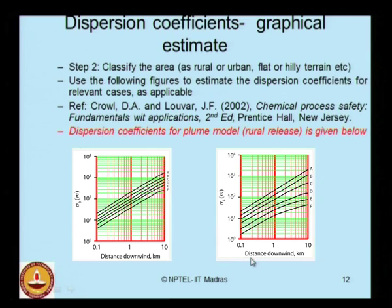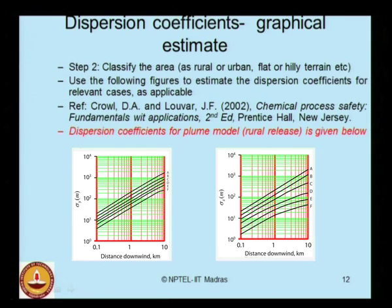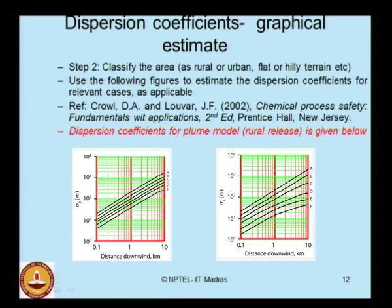For a given downwind distance in kilometers, knowing your Pasquill stability class, you can determine sigma z and sigma y in meters. The dispersion coefficients carry units for dimensional consistency in the concentration expression in kg per cubic meter. Sigma y and sigma z estimated this way can be used in the plume model for a rural release.